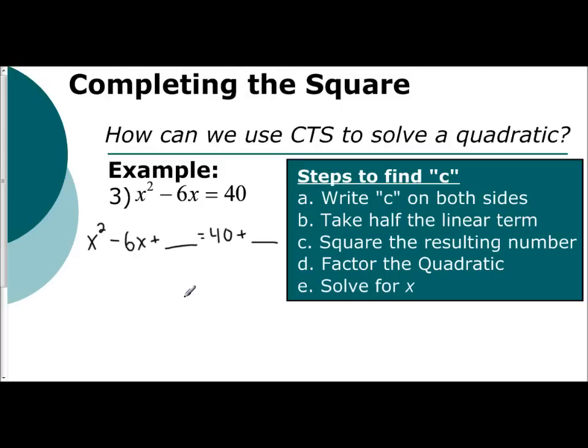The key to being able to complete the square easily is organization of work. And so now we follow that process we used before. You're going to take half, I'll do it over on the side here, of your linear term. So negative 6x, so I'm going to take half of negative 6, divide by 2. So half of negative 6 is negative 3. Write this number down. You're going to see why this number is extremely important in the answer.